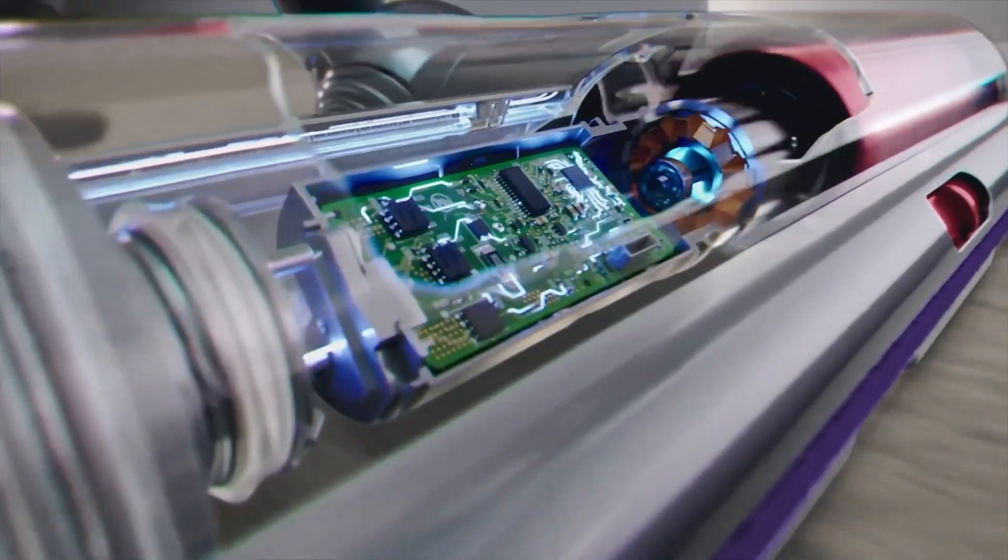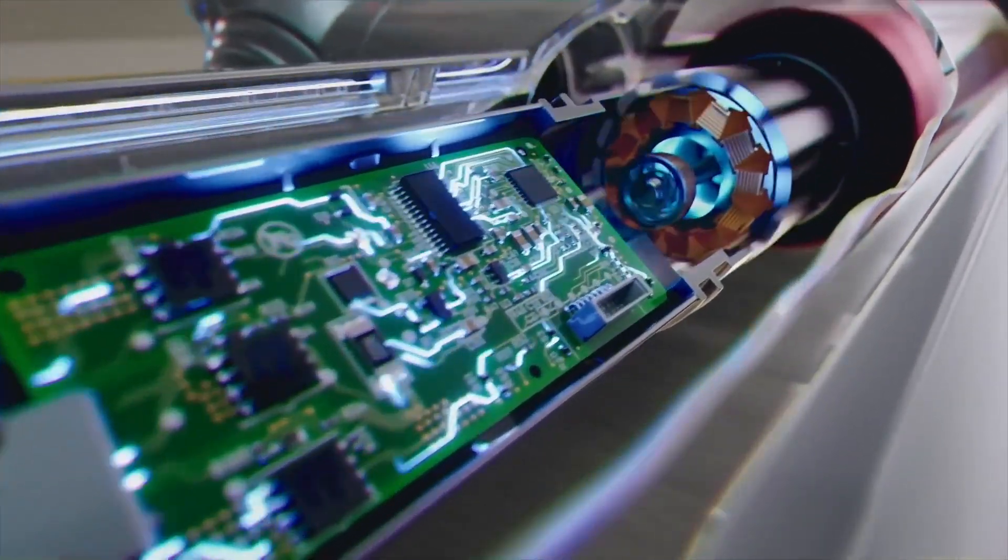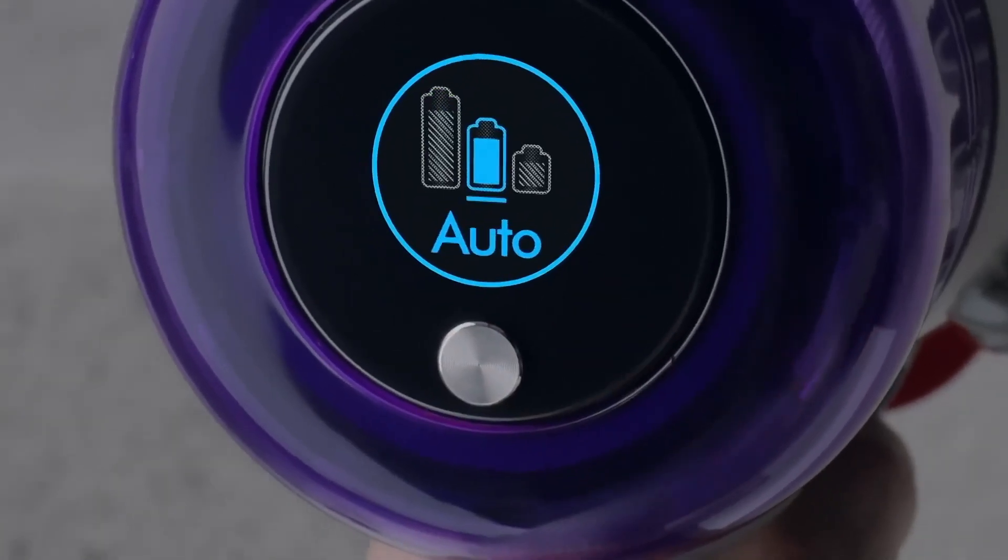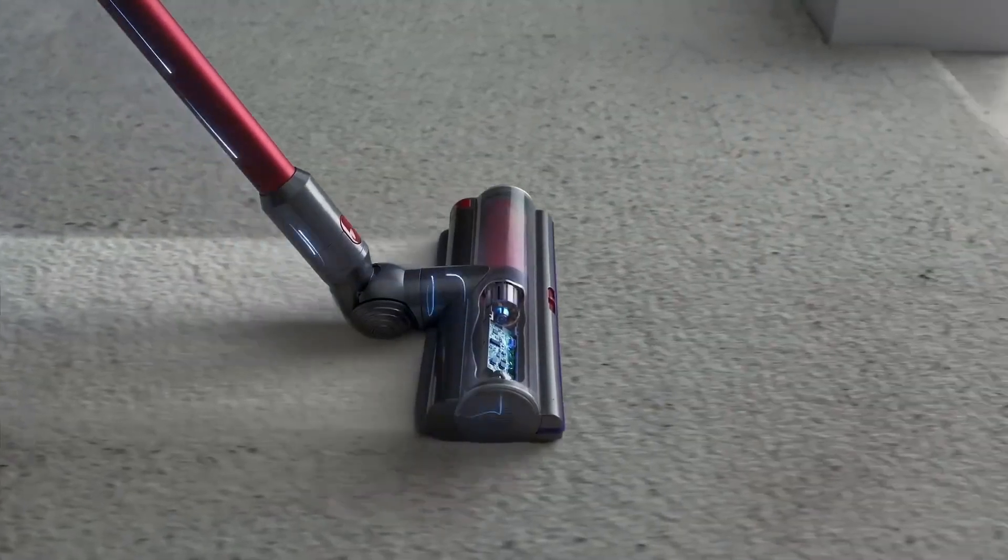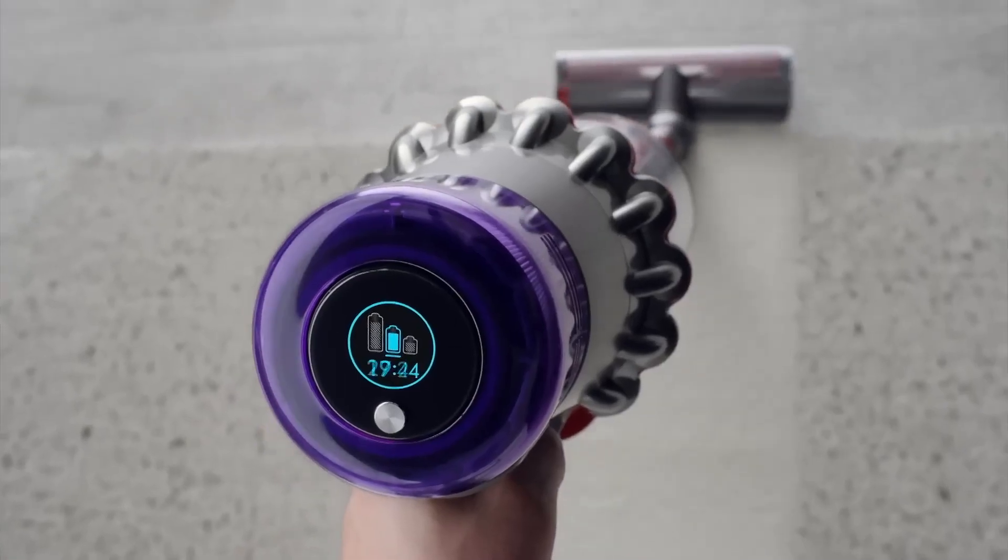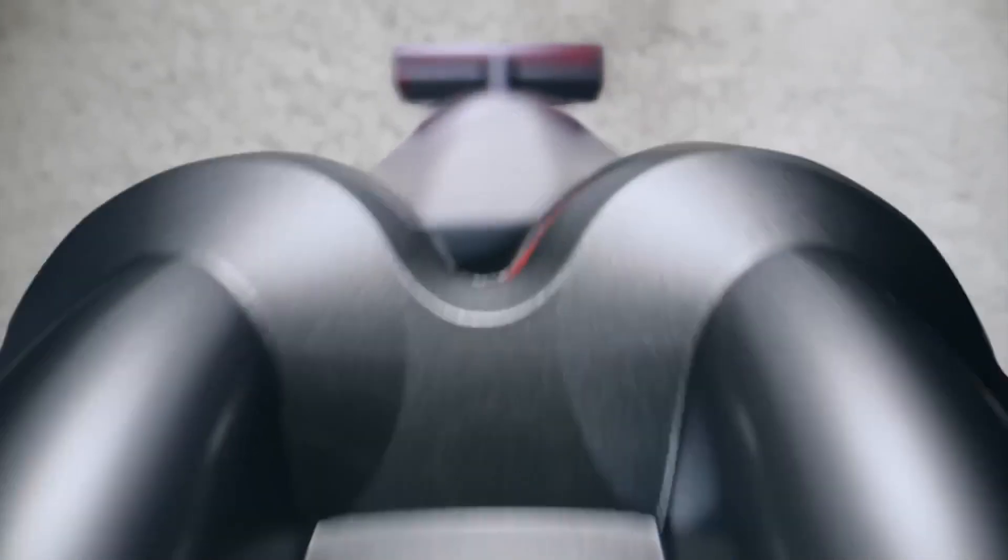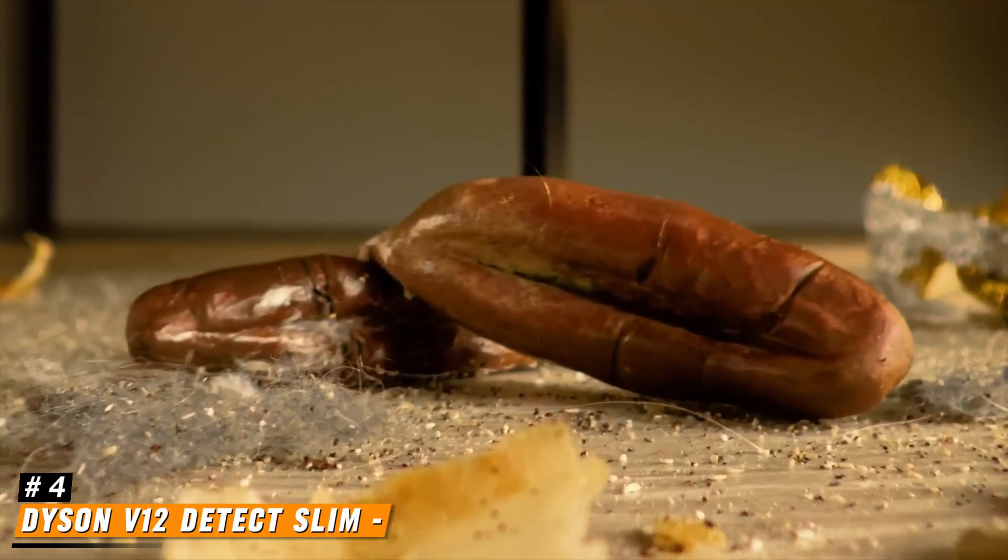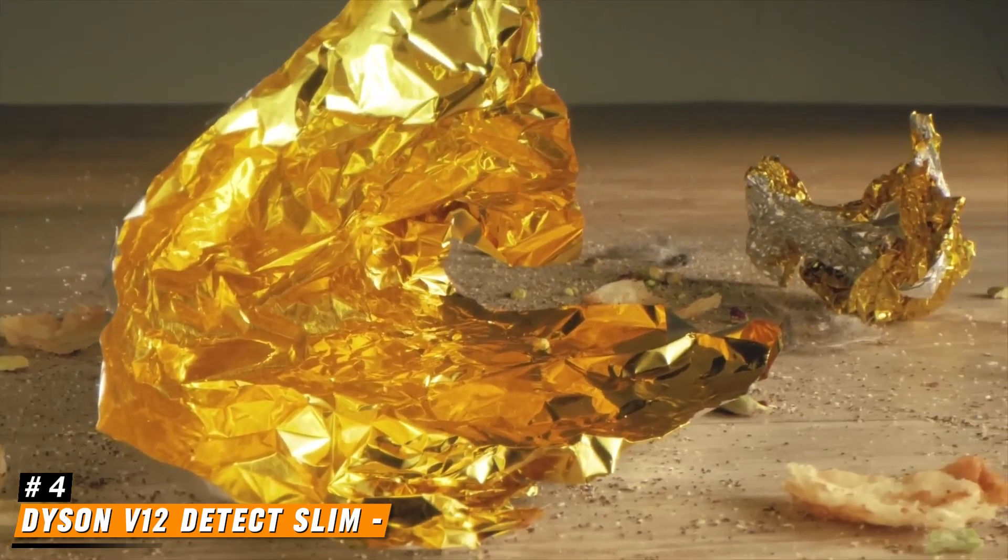In addition to its powerful suction, the Dyson Outsize Plus features advanced filtration technology. The vacuum is equipped with a whole-machine HEPA filtration system that captures 99.99% of particles as small as 0.3 microns, including allergens and bacteria. This is particularly appealing for allergy sufferers or households with pets. The filtration system is washable, ensuring that it can be maintained easily over time.